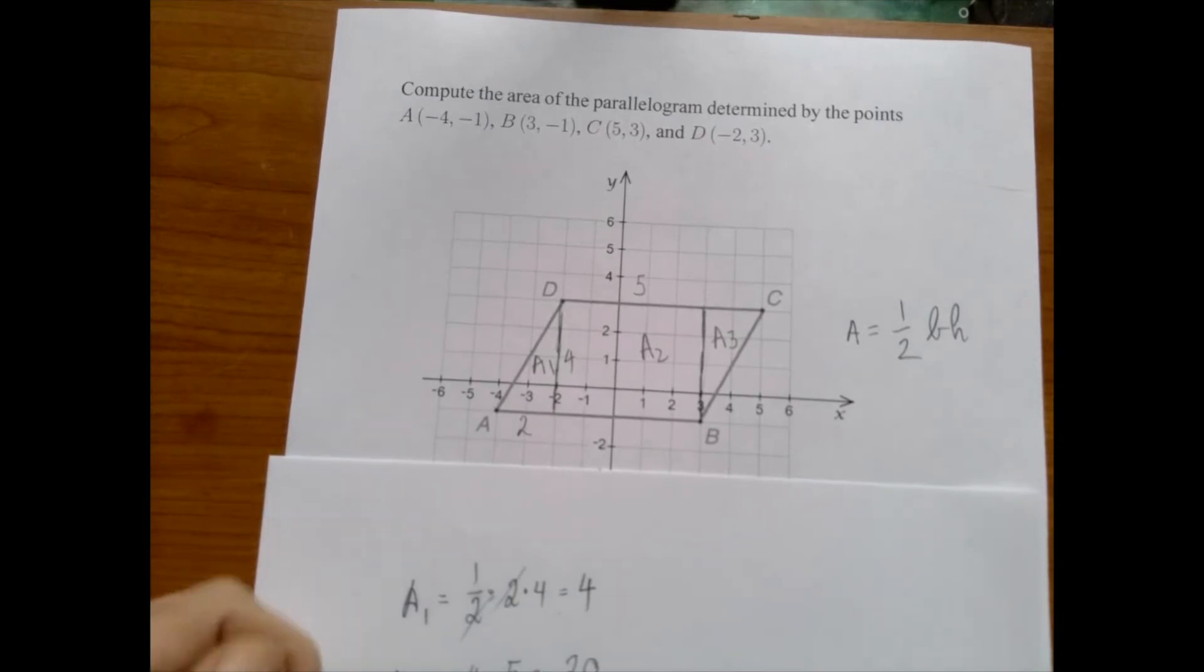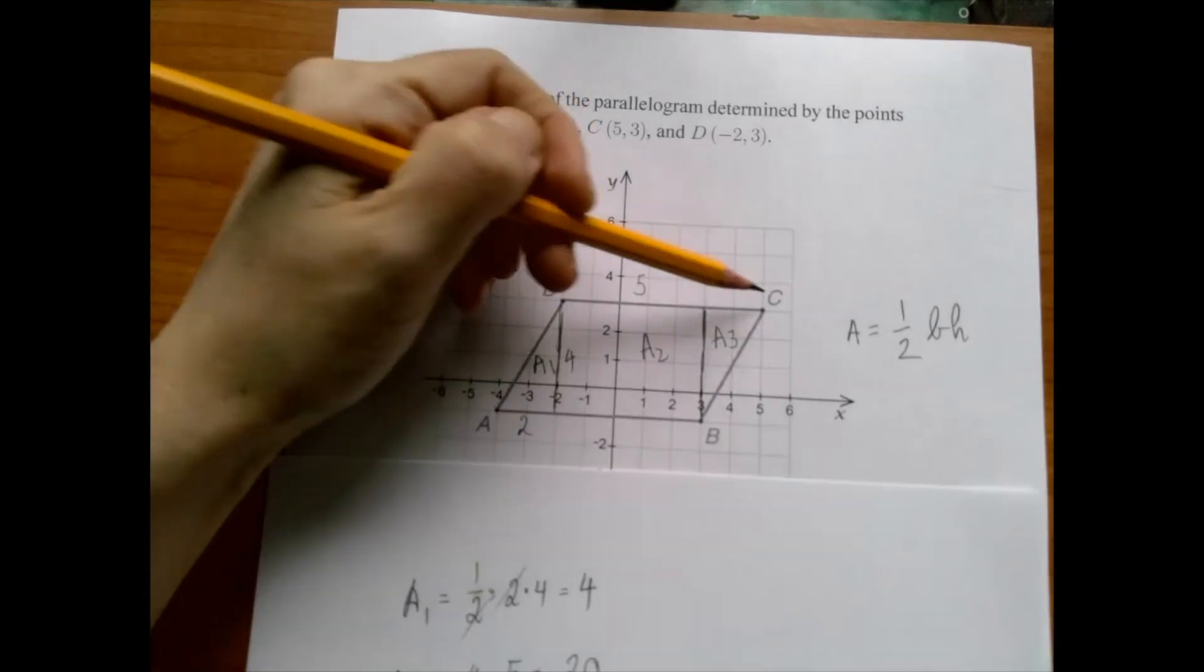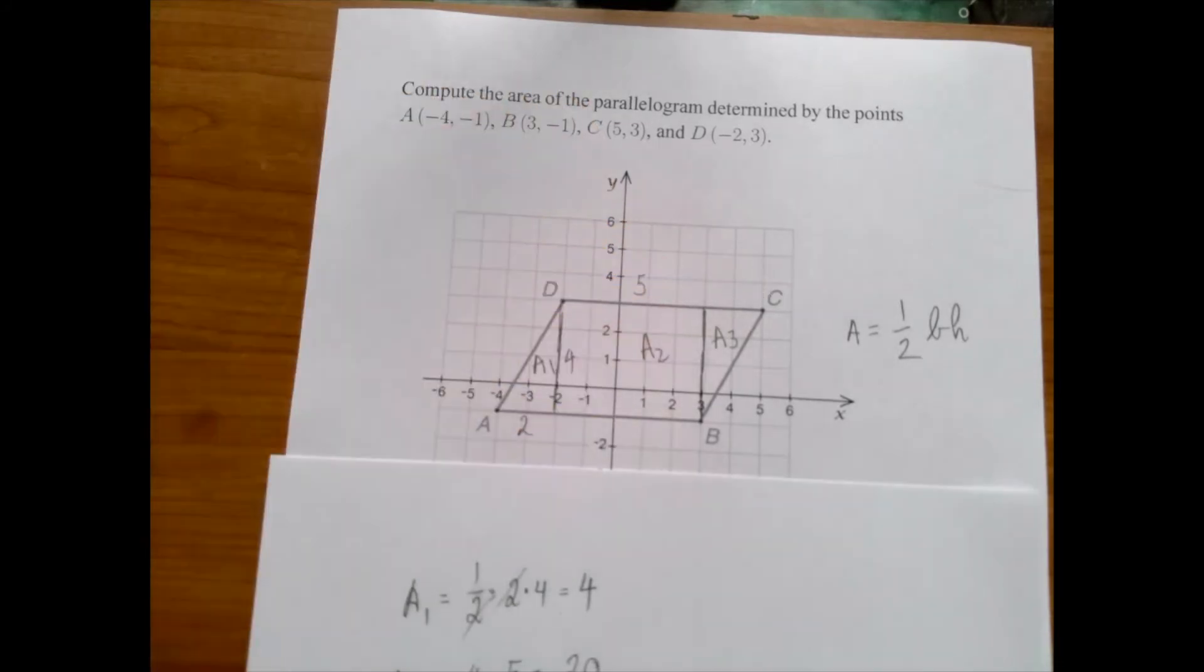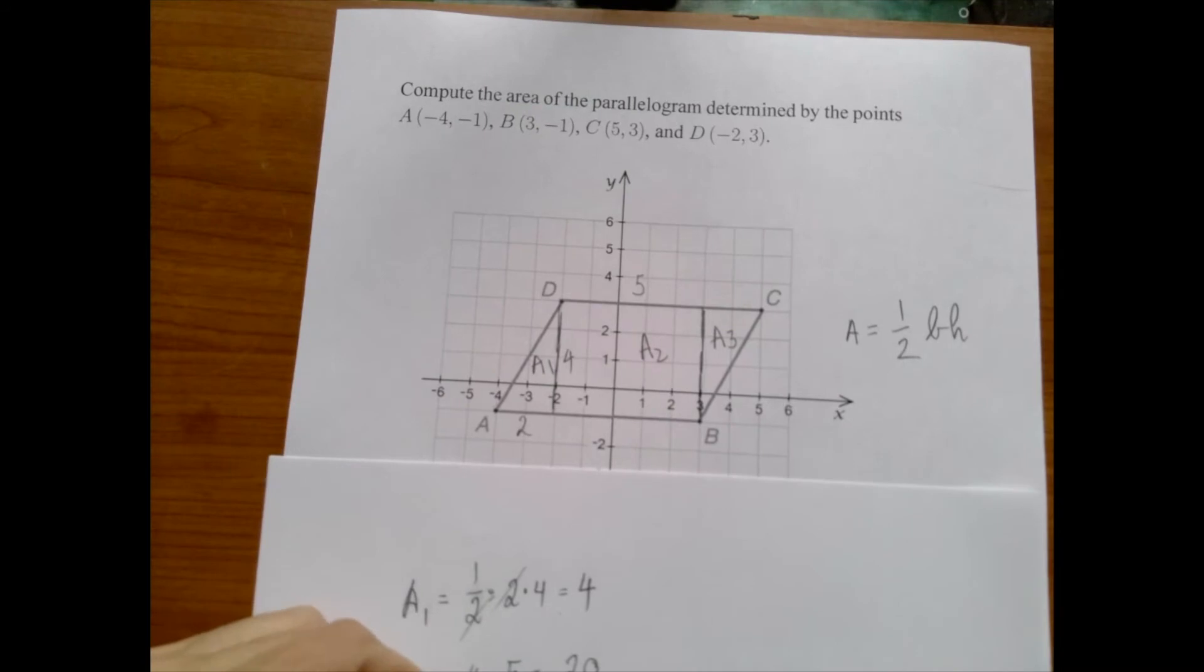The third area, well, this is a congruent triangle, so it's also a right triangle, which shorter sides are two and four. So it's one-half times two times four, which is still four.